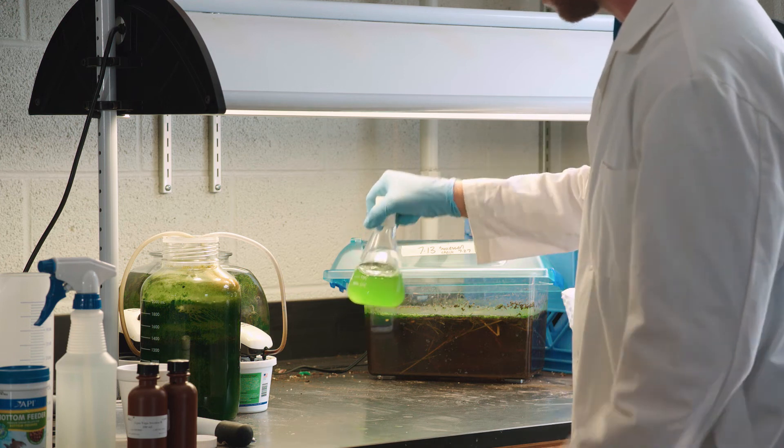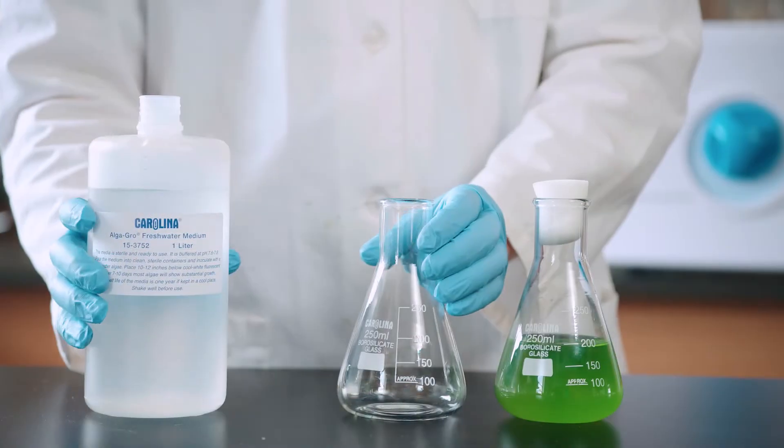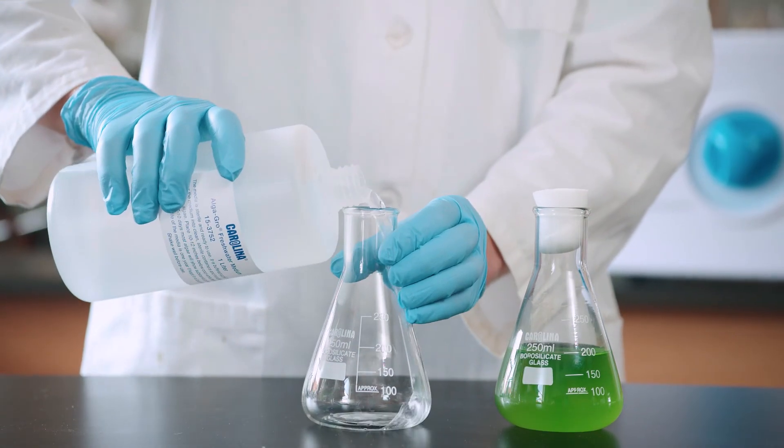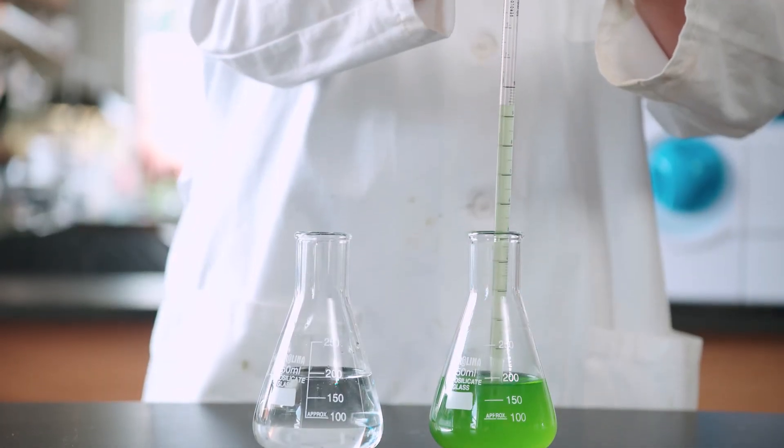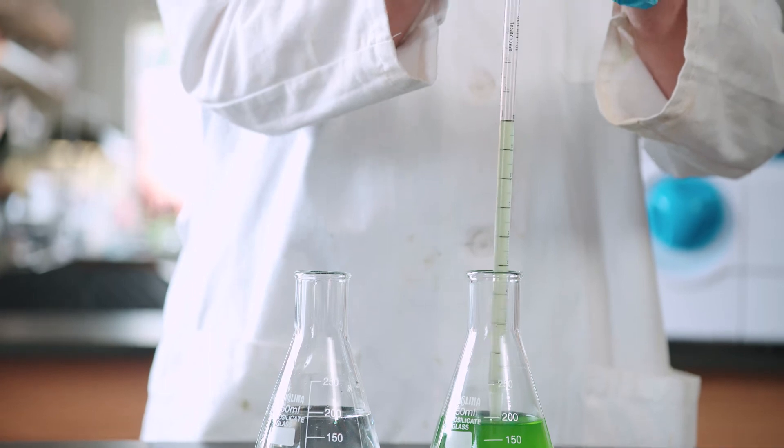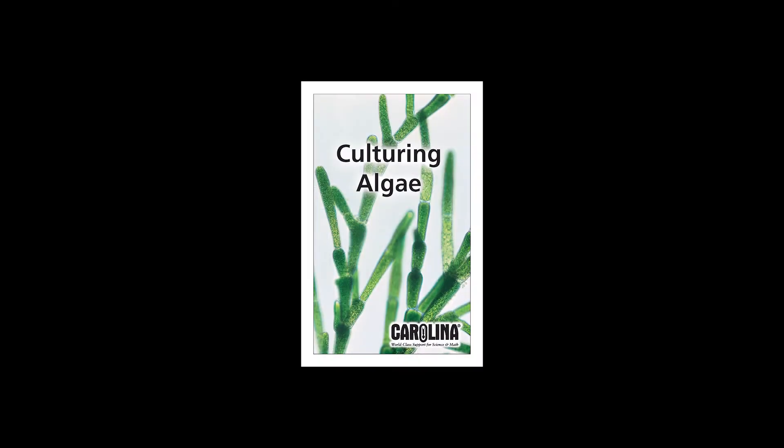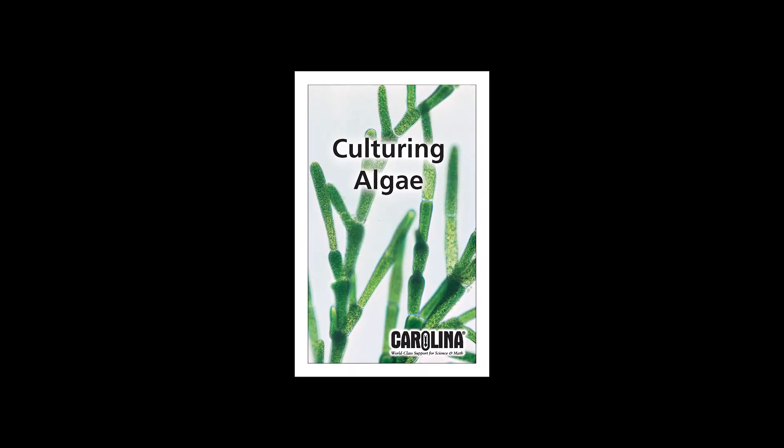For short-term culturing, fill another container with 200 milliliters of fresh media, and then add 10 milliliters of the original subculture or original stock. Long-term culturing is not practical for classroom use.